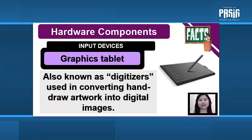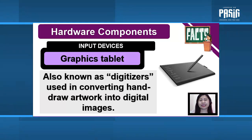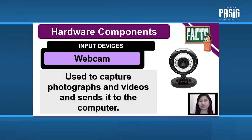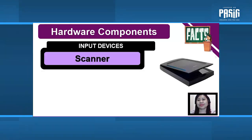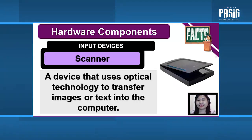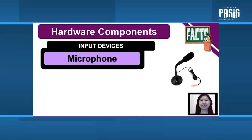Graphics tablet, also known as digitizers, is used in converting hand-drawn artwork into digital images. It is also used when making digital signatures. Webcam: used to capture photographs and videos and send them to the computer. Scanner: a device that uses optical technology to transfer images or text into the computer.